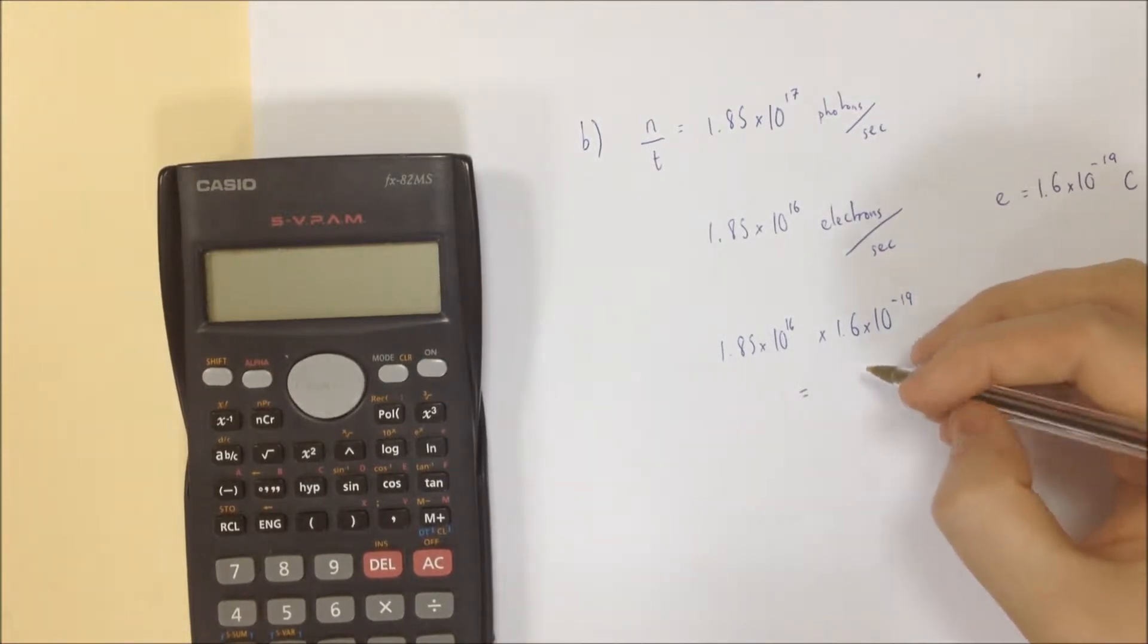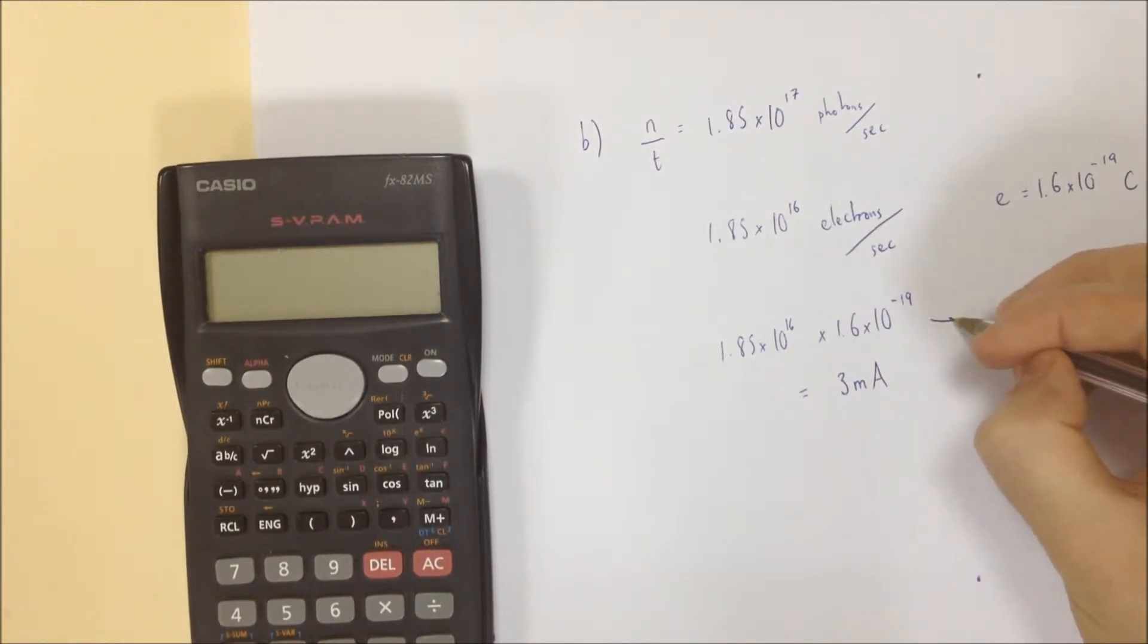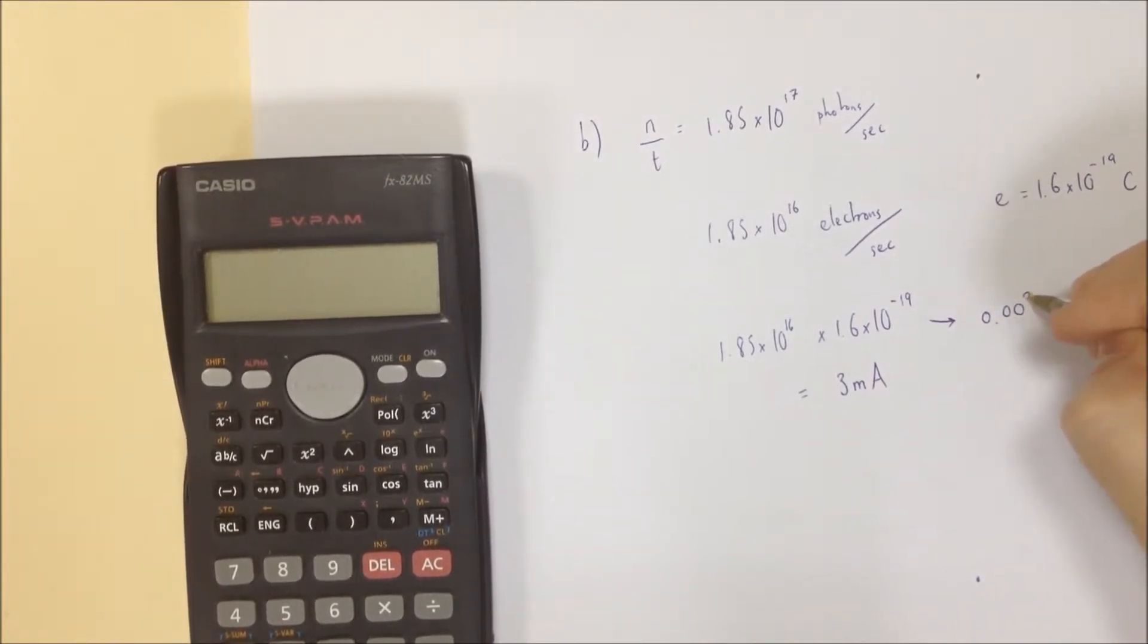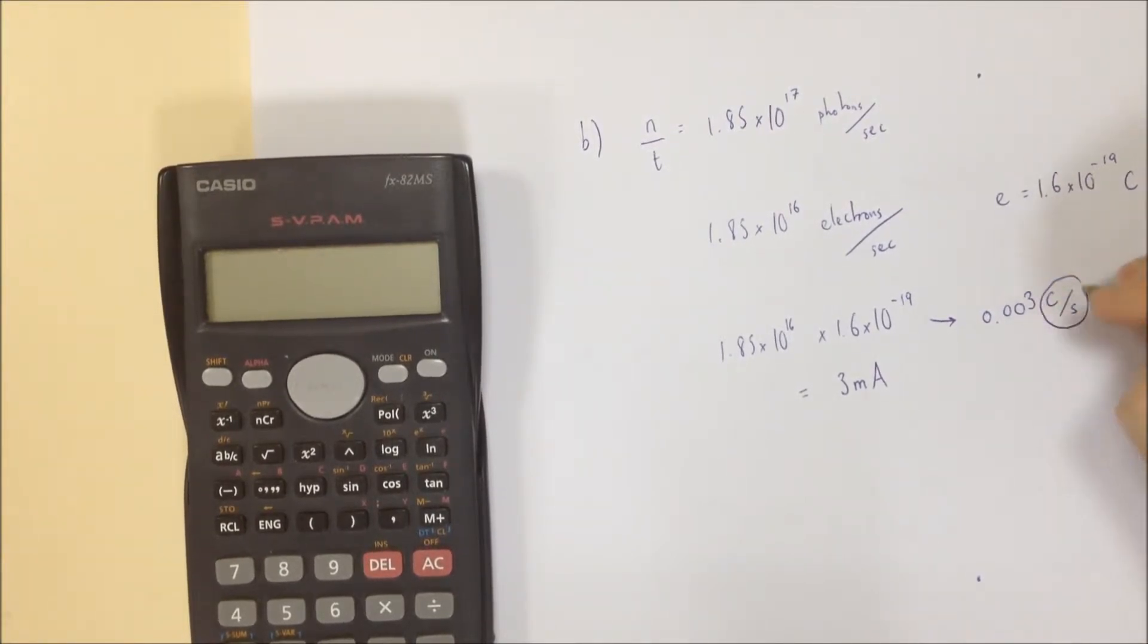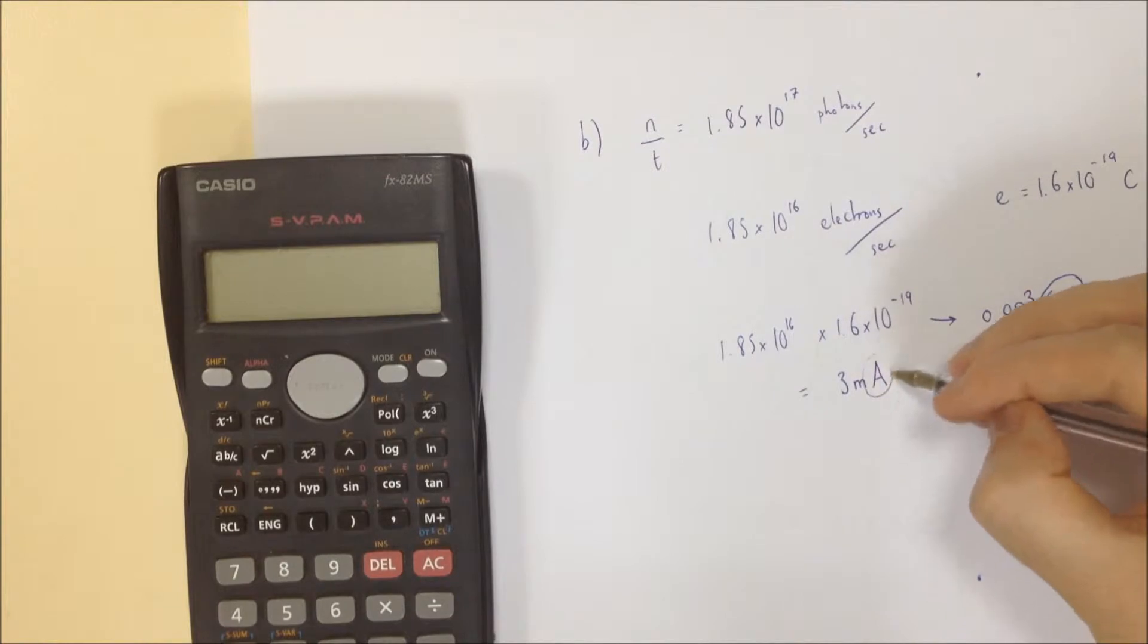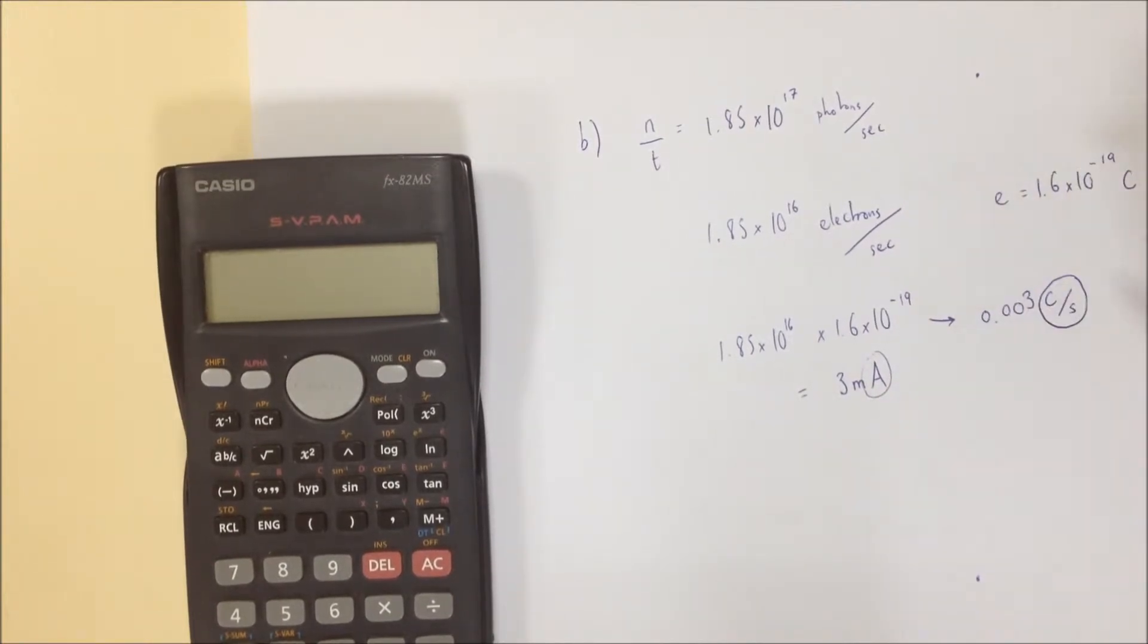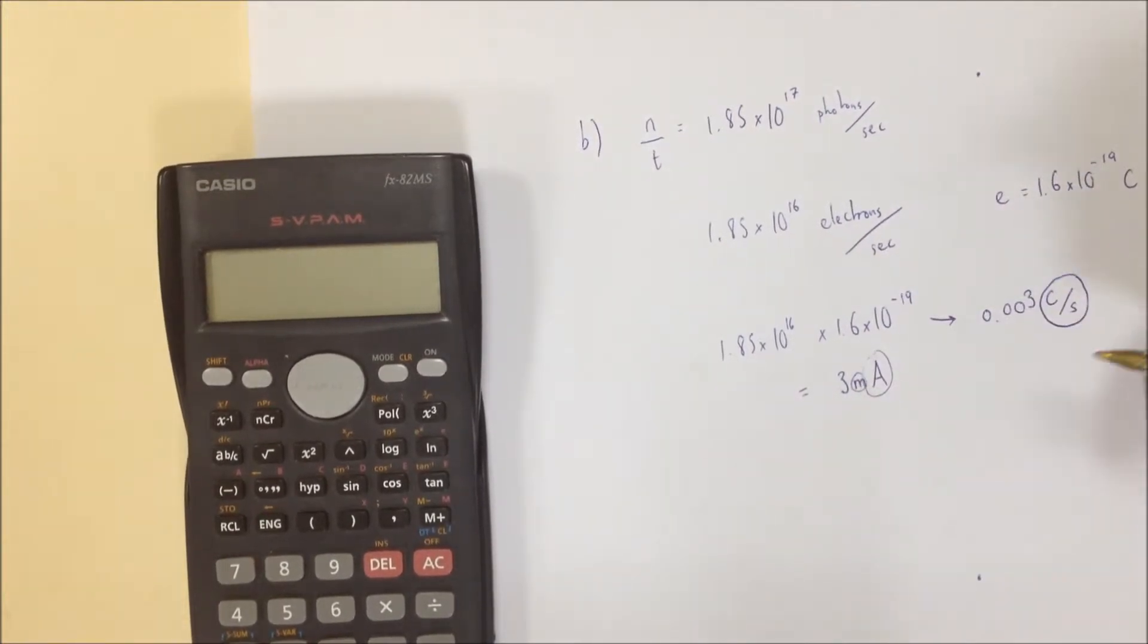is going to give you the charge per second. That comes out to be 3 milliamps. The actual number you're going to get is going to be 0.003, and that's coulombs per second. And of course a coulombs per second is equivalent to an amp, and then it's 0.003, which is where the milli comes from in part B.